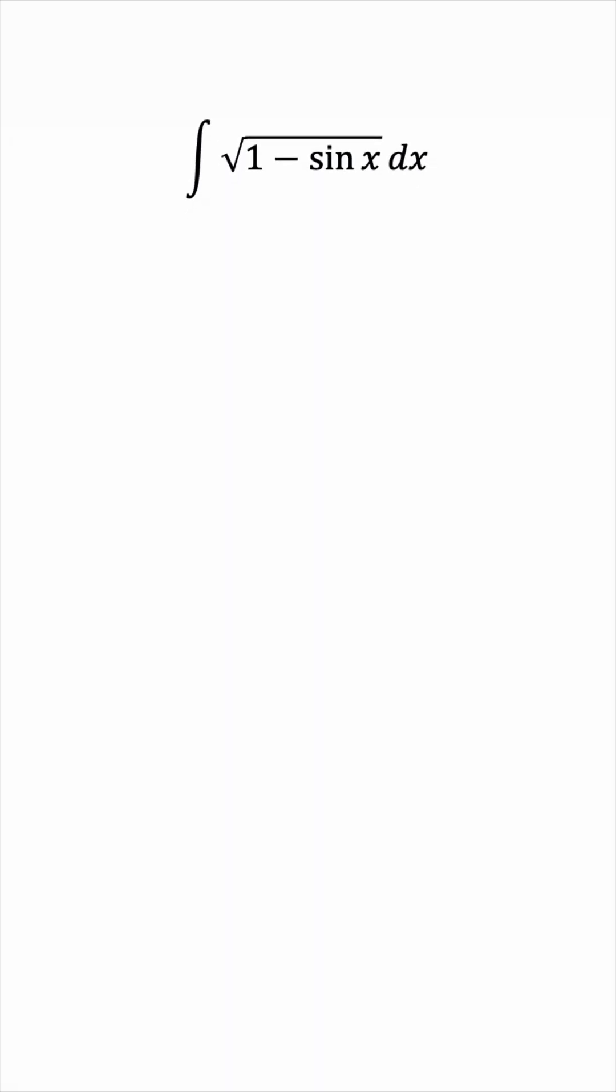The first thing to notice is that it would be really nice if we had 1 minus sine squared instead of 1 minus sine x, because we know from the fundamental Pythagorean identity in trigonometry that this is equal to cosine squared x.